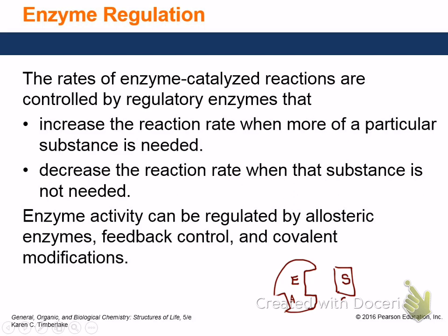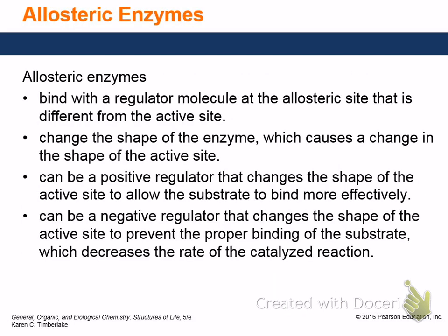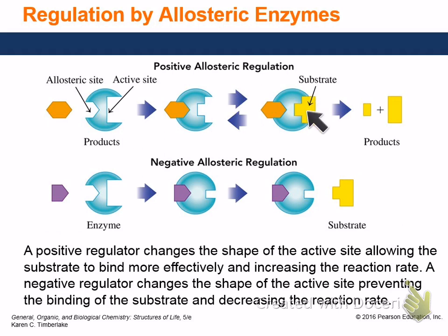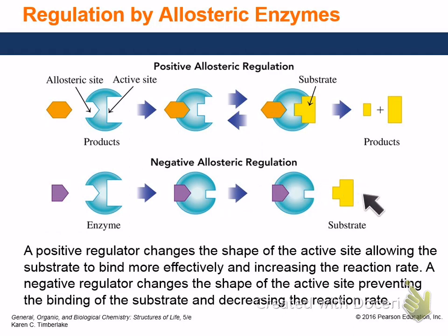We can have covalent modification — insulin is one of those enzymes as well. For positive allosteric interaction: this is the enzyme, this is the active site, a small molecule fits into the allosteric site, it changes the shape of the active site so the substrate fits better, causing a faster reaction. For negative allosteric interactions, the small molecule binds and changes the shape so the substrate doesn't fit as well and the reaction goes slower.